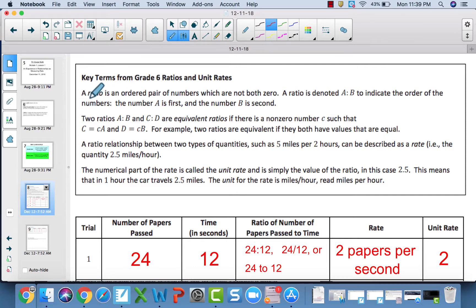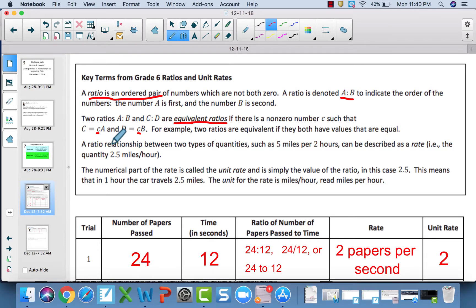A ratio is an ordered pair, two numbers which are both not zero. You can write ratios like this, with a colon, with the word 'to,' or as a fraction. We have been using fractions a lot recently simply because it's easier to manipulate ratios if they're written as a fraction. Ratios are equivalent if you can multiply both ratios by the same number. If you multiply both parts or divide both parts of the ratio by the same number you get an equivalent ratio.